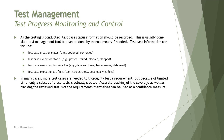Accurate tracking of coverage as well as tracking the reviewed status of requirements themselves can be used as confidence measures. The fifth dimension, confidence, is about making sure that when a tester monitors what has been done earlier, they can assess whether what is being done is enough — should we write more test cases? That is what confidence measures are, and they can be supported with documentation.